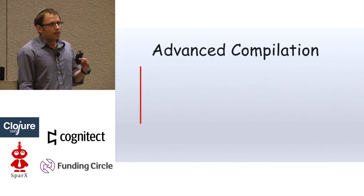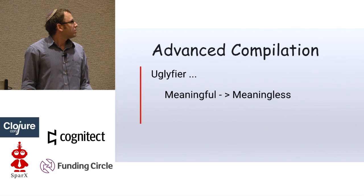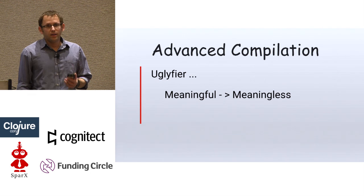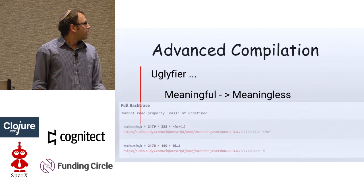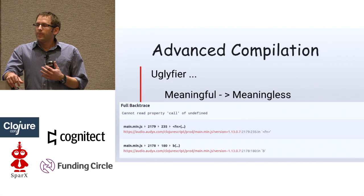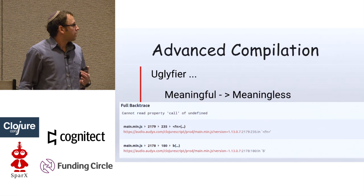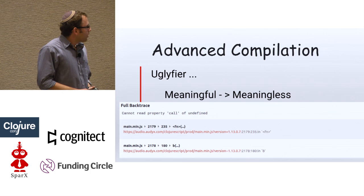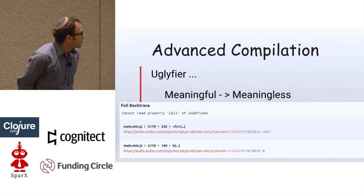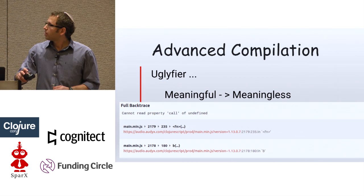That was problem number one — the long compile time. The second issue is that compilation is known as an uglifier: it takes our meaningful code and turns it into meaningless code. We use a tool called HoneyBadger to detect exceptions in our live app, and an exception report showing 'line 2,179, column 235 in our minified code' doesn't really tell us anything about what the problem is.